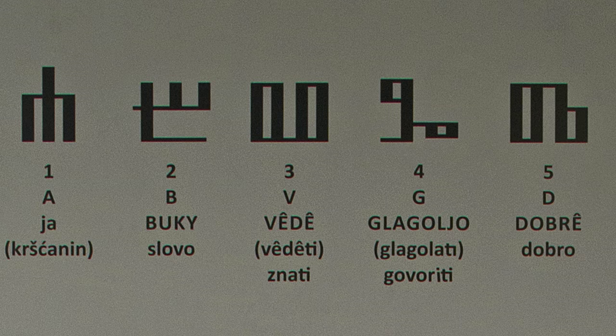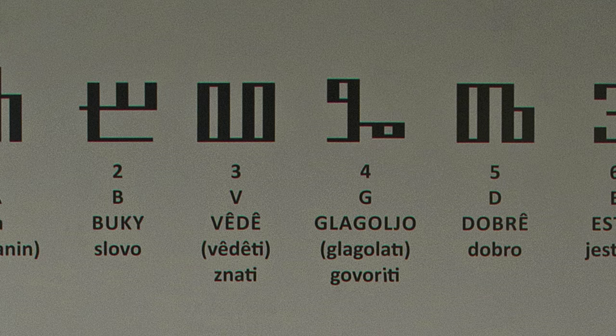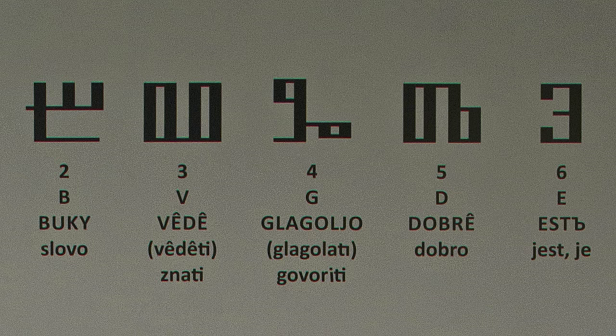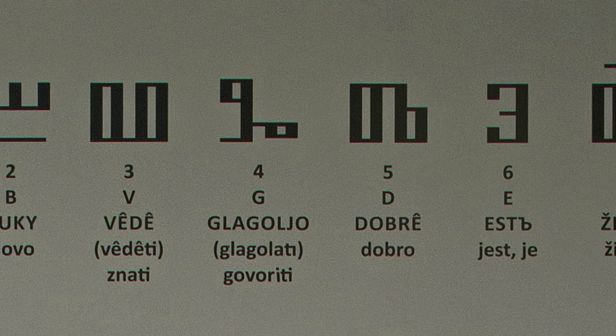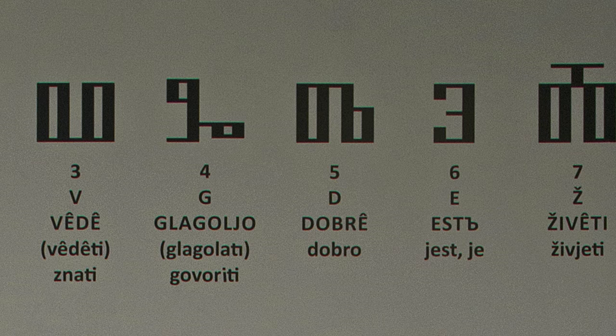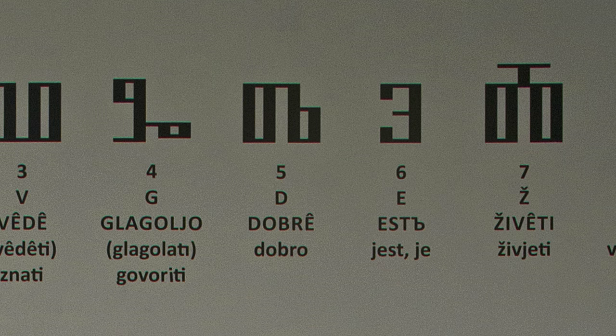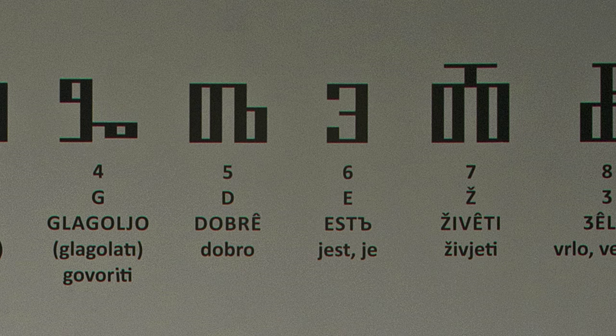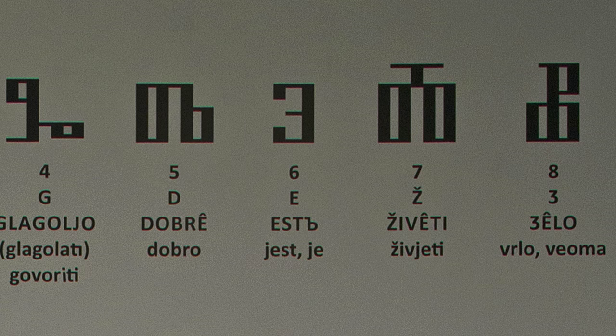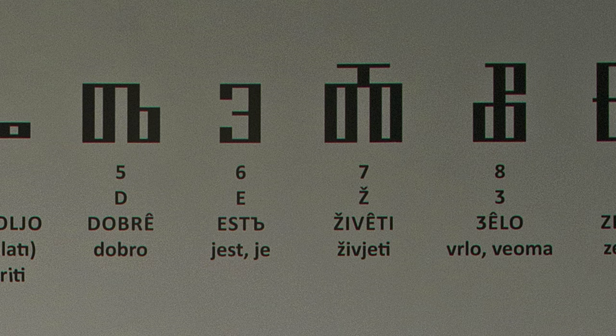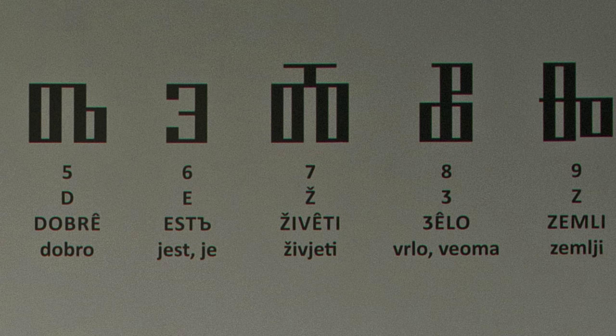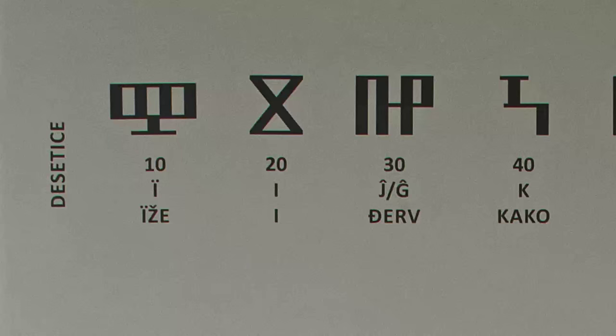One: A — As — I, a Christian. Two: B — Buki — letter. Three: V — Viedje — know. Four: G — Glagoli — talk. Five: D — Dobr — well. Six: E — Jest — is. Seven: Ž — Živjeti — live. Eight: DZ — Dzelo — very. Nine: Z — Zemlja — earth.